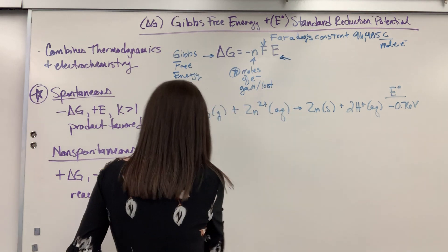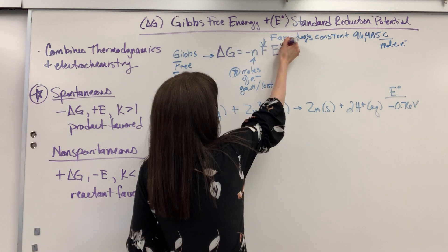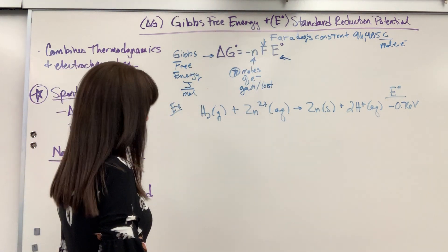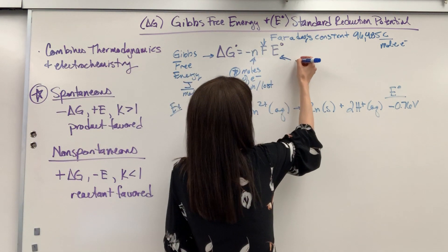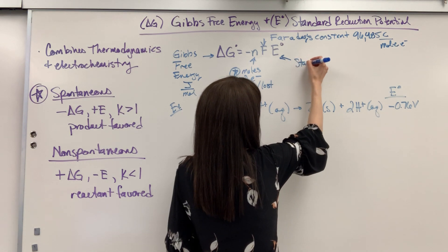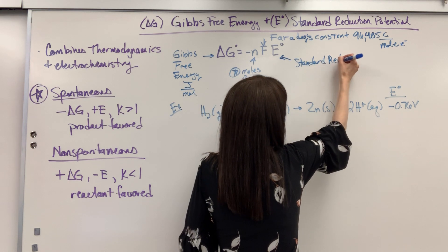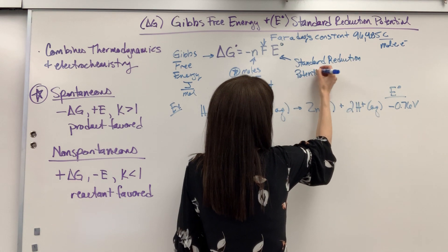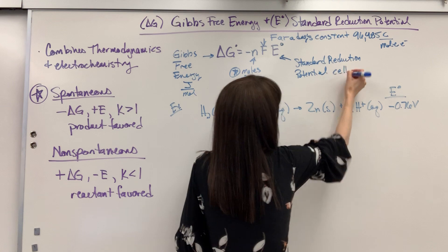E is the standard reduction potential for a cell at standard conditions. Often this is how the problem will be given, you'll be given two half reactions and you have to determine which two half reactions come together to make a voltaic cell, so a positive E.